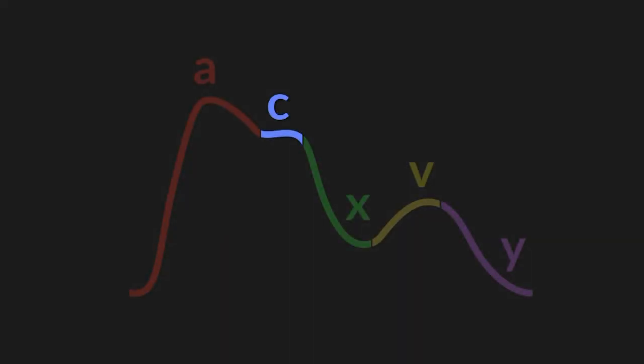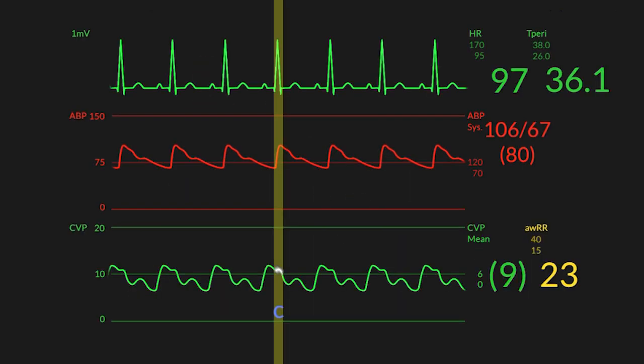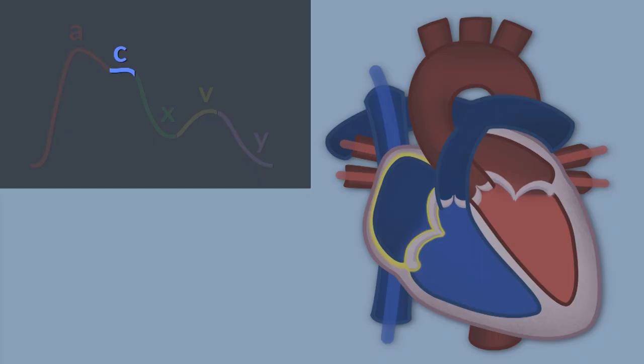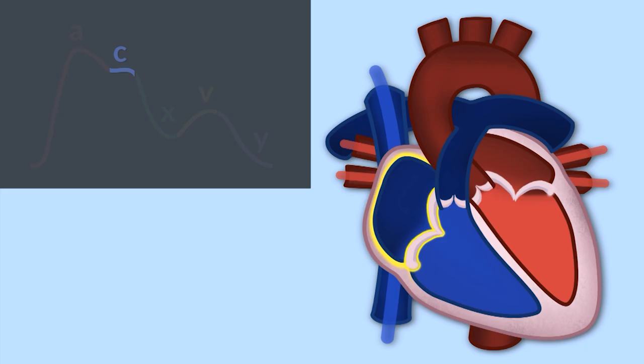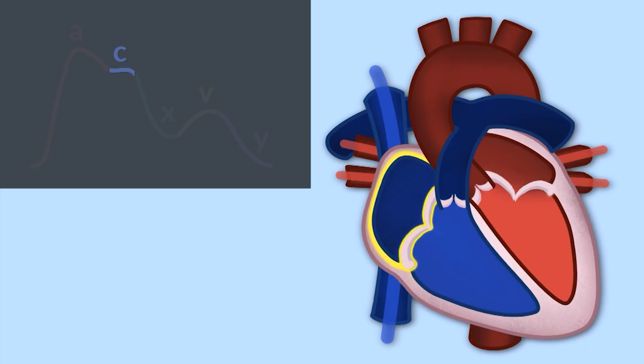The next part of the CVP waveform is the C wave. You can see with the simultaneous A-line trace that the C wave occurs during the onset of ventricular systole. And if we look up here at the EKG, that same time interval corresponds to the R wave.